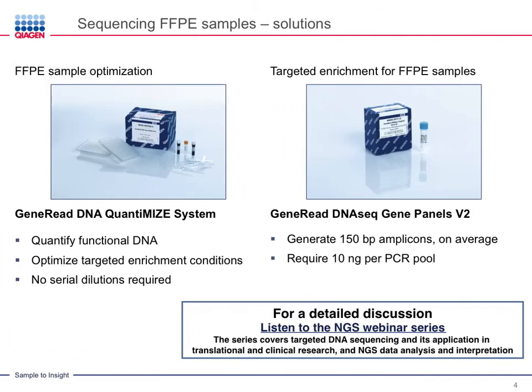To overcome the challenges of FFPE quality and quantity, QIAGEN has developed the GeneRead DNA QuantiMIDE System and GeneRead DNA Seq Panels V2. The GeneRead DNA QuantiMIDE System is a qPCR-based solution that quantifies the functional amounts of DNA and optimizes targeted enrichment conditions for FFPE samples without requiring any serial dilutions.